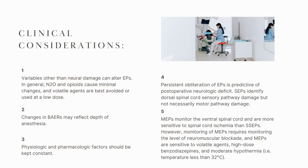Variables other than neural damage can alter EPs. In general, N2O and opioids cause minimal changes, and volatile agents are best avoided or used at a low dose. Changes in BAERs may reflect depth of anesthesia.